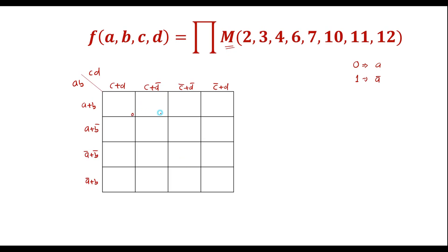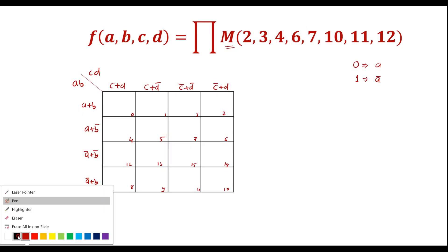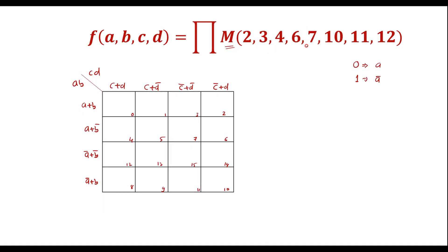The cell numbers are 0 through 15. Now in these cell numbers we have to write 0: cells 2, 3, 4, 6, 7, 10, 11, and 12. By default, in all other cells there is 1.